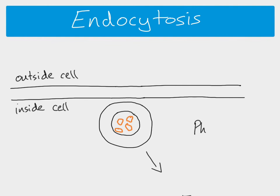There are two kinds of endocytosis. Phagocytosis is familiar when we think about white blood cells, and it's also how unicellular organisms like amoeba take in nutrients. Pinocytosis is basically the same thing, but the vesicles are much smaller — it often involves taking in liquids. Fairly straightforward — hopefully you followed all of that, thank you very much.